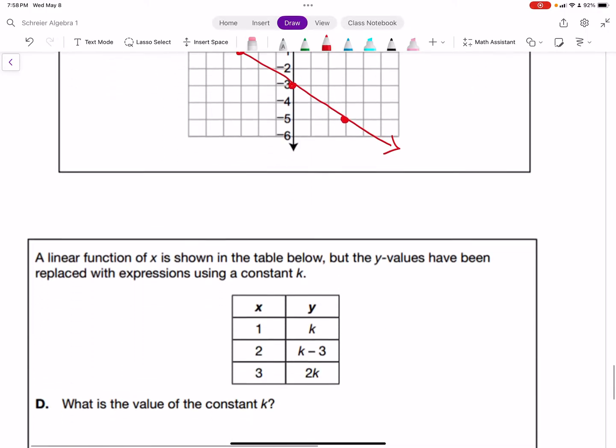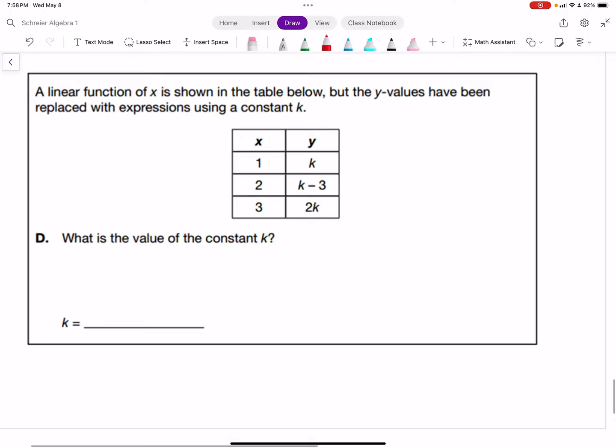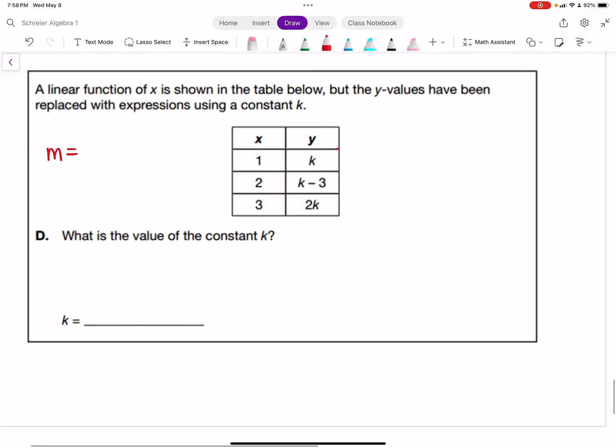Let's get to the last one, which I think is a little tricky because we don't see this much in Algebra 1. We have a linear function and the y values are written in terms of k. We're going to use our slope formula again to get two expressions for slope.